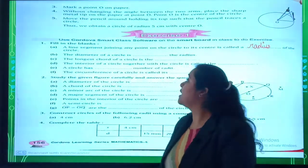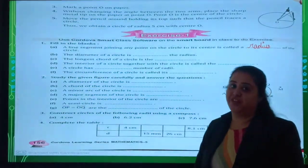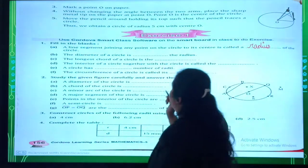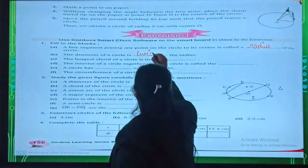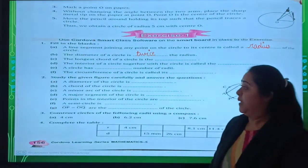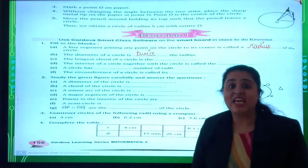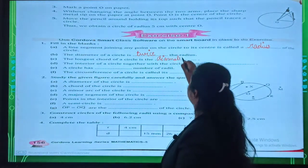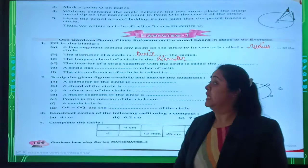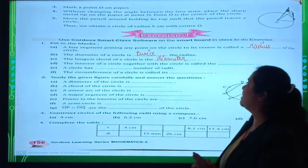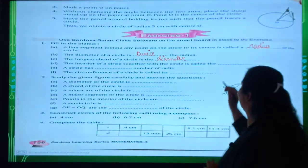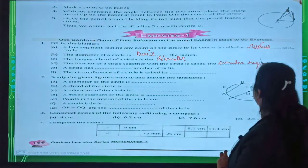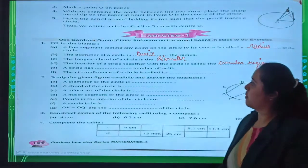Second. The diameter of the circle is twice the radius. Diameter is double, I can say twice of the radius. Third, the longest chord of the circle is the diameter. Fourth, the interior of the circle together with the circle is called circular region.